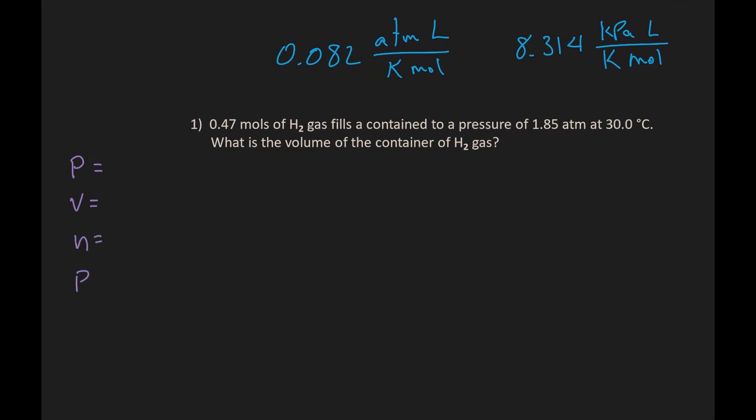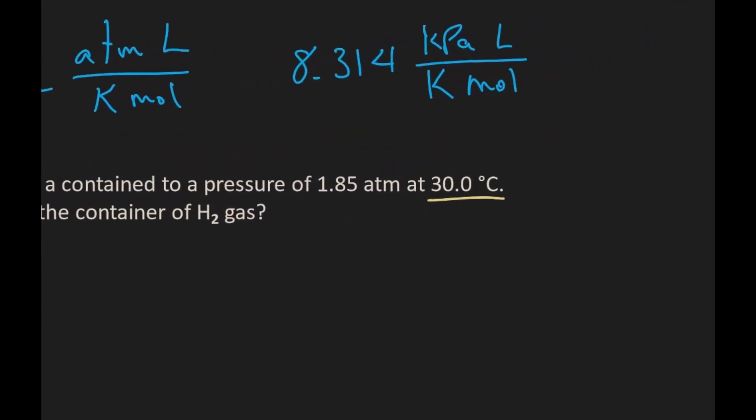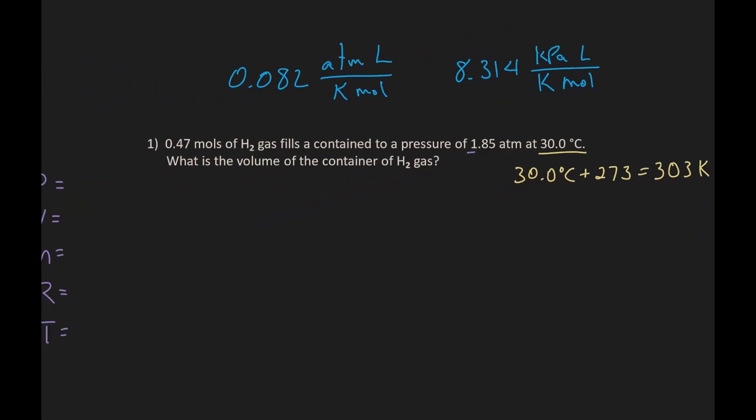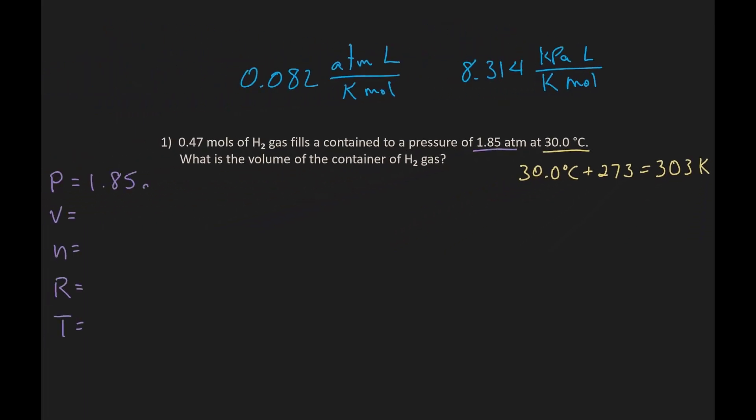Let's list our variables here. In the problem we notice that the temperature is given in Celsius, so we have to convert by adding 273, and that will give us Kelvin. So now we can list values for each variable.